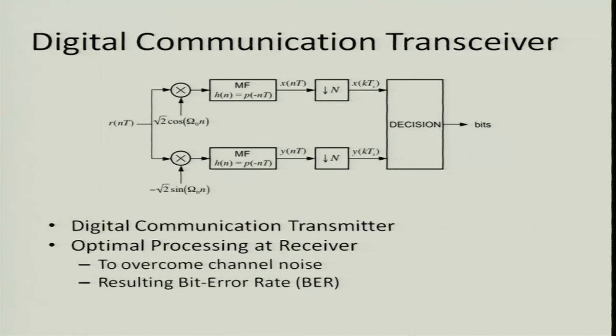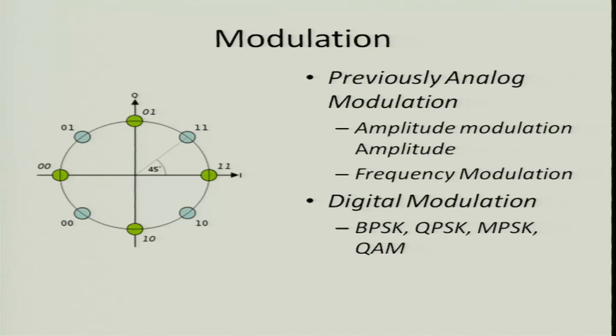Each component of a digital communication system is very exciting by itself. For instance, when you talk about a transceiver — the transmitter and receiver — what are the different schemes that can be used at the transmitter and receiver to maximize the signal-to-noise power ratio? We have seen analog modulation schemes such as amplitude modulation and frequency modulation. The corresponding digital modulation schemes are completely different, being in the digital domain, such as binary phase shift keying, frequency shift keying, M-ary phase shift keying, and so on.